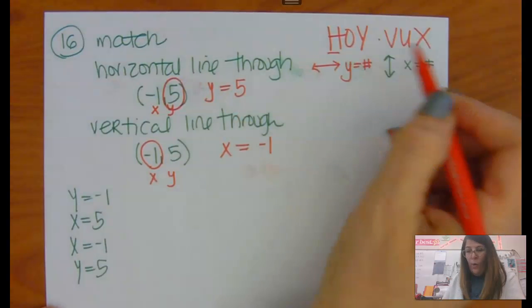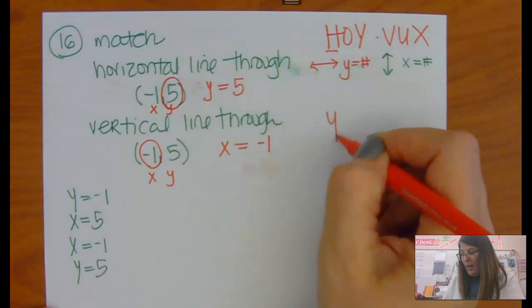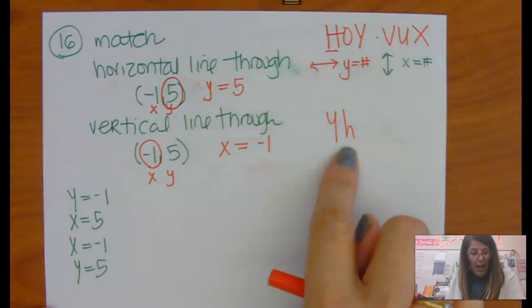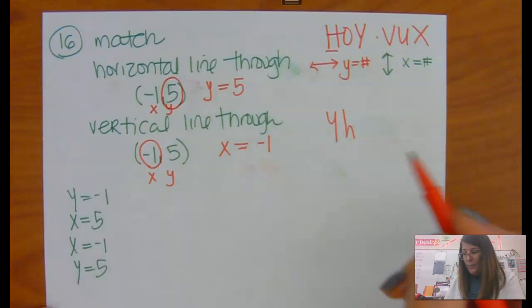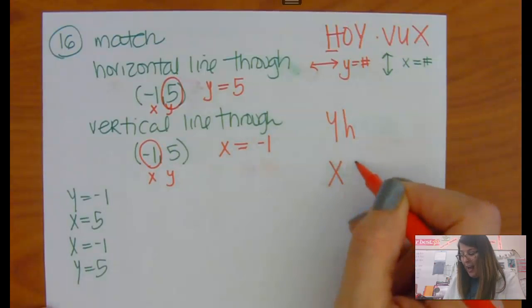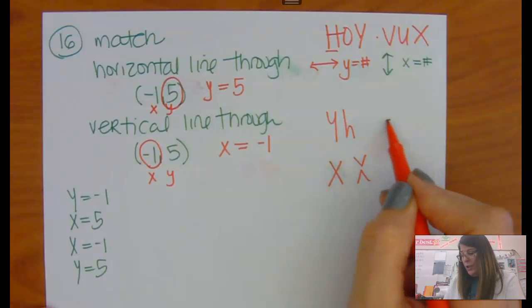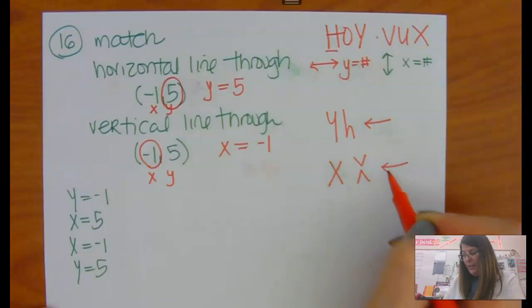So if you can remember hoibox, that helps. Another way to remember this is if you write your y like this, it kind of looks like an upside down h. And an x kind of looks like two v's put together. So this could remind you that y equals is the horizontal and x equals is the vertical.